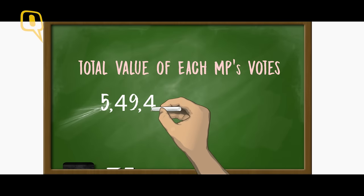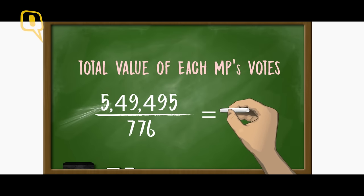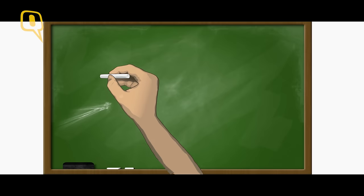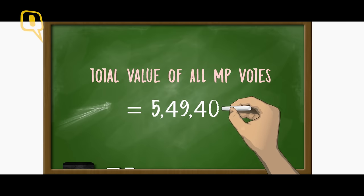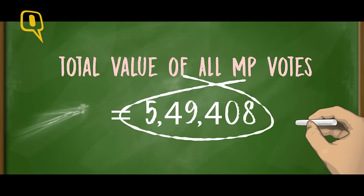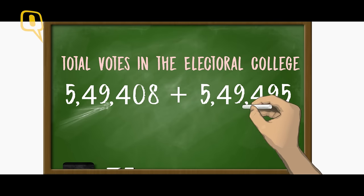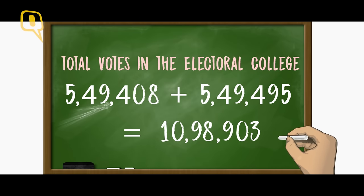You've understood the MLA vote, but what about the MP vote? It's actually quite simple. You take the total value of all the MLA votes and divide it by the total number of parliamentarians, 776. Which means that the value of each MP's vote is 708. Add it all up, and the total value of all the MP votes is about 5.5 lakh, which gives us the total number of votes in the electoral college: MPs plus MLAs equals 10,98,903 votes.